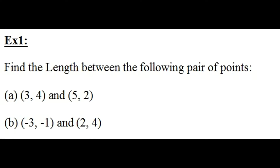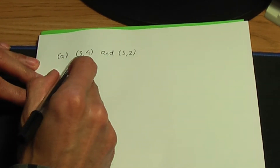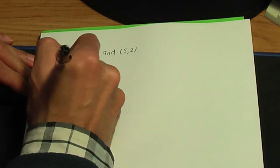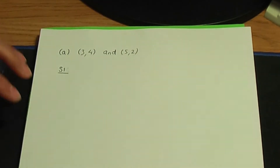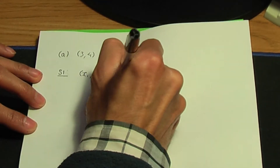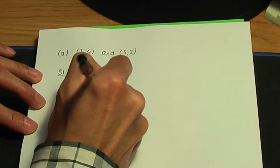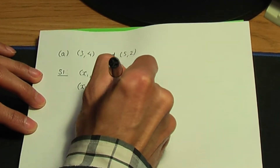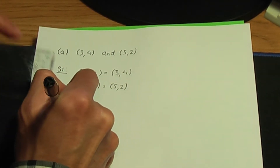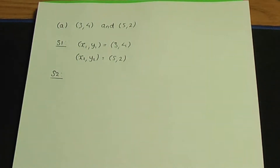Example one: find the length between the following pair of points. In part A, the first point has coordinates 3, 4 and the second point has coordinates 5, 2. In step one, I'll name the first coordinate x1, y1 as 3, 4, and the second coordinate x2, y2 as 5, 2. In step two, I'll apply the length formula. The formula for D is the square root of (x1 minus x2) squared plus (y1 minus y2) squared.